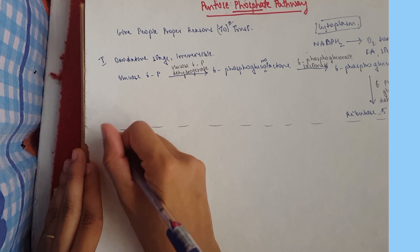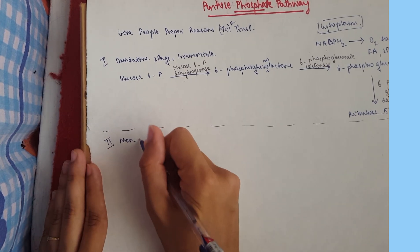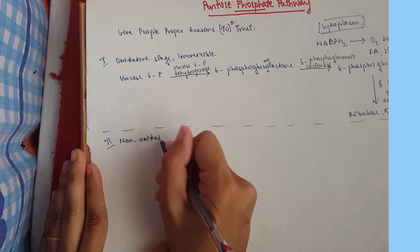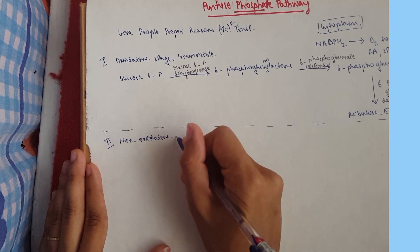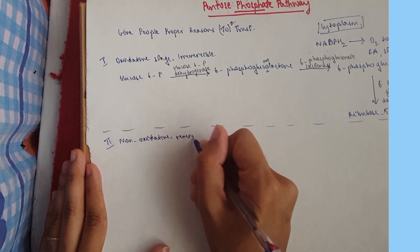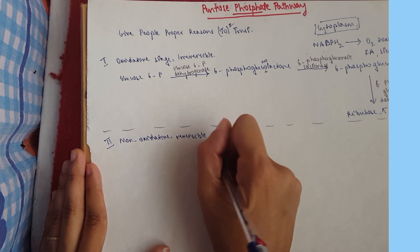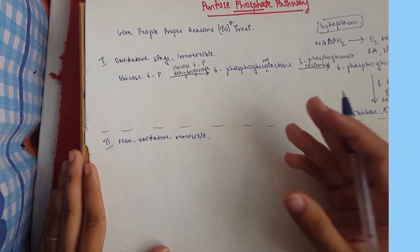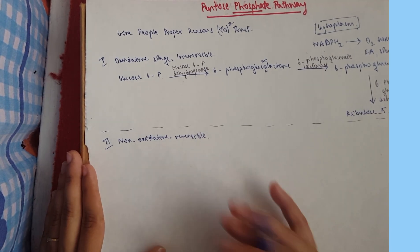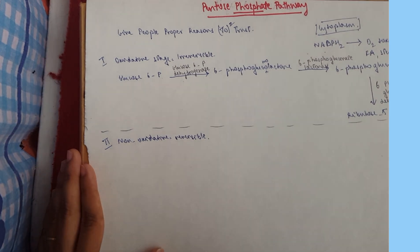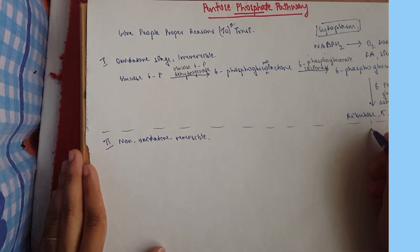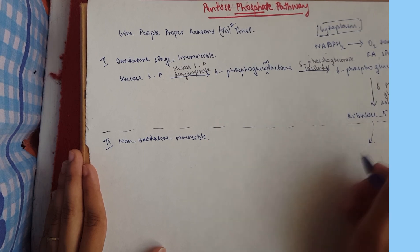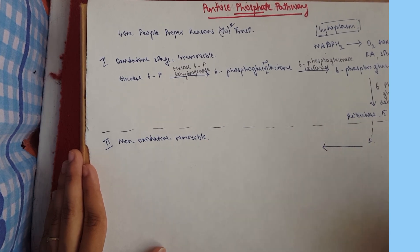Then we go on to our next one, non-oxidative or reversible. And here you have interconversion of different sugar phosphates.